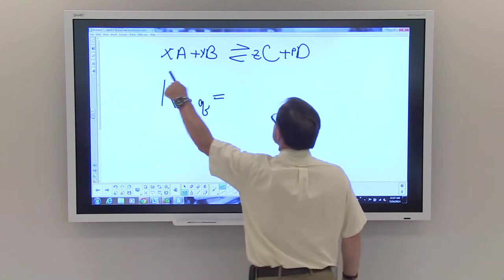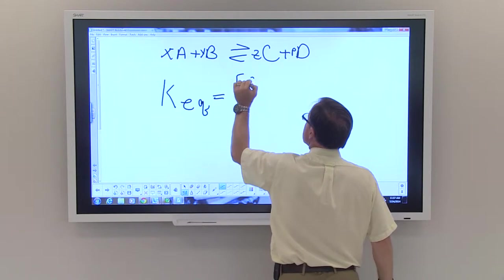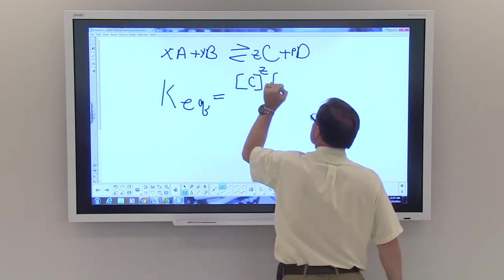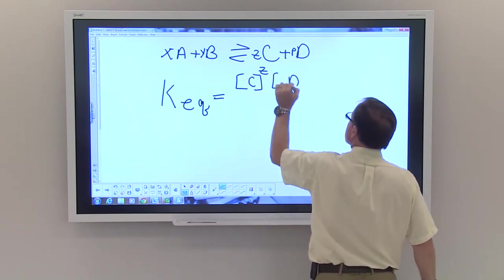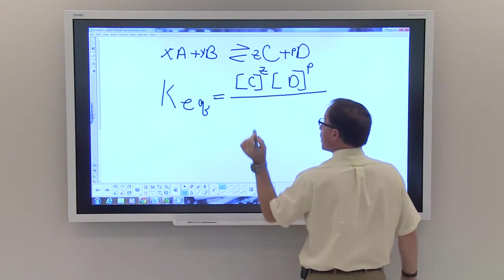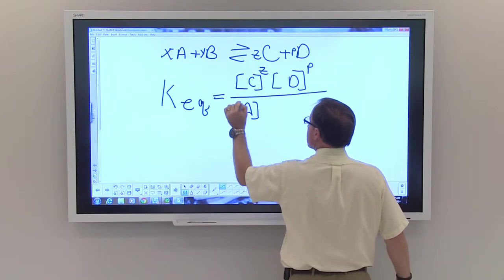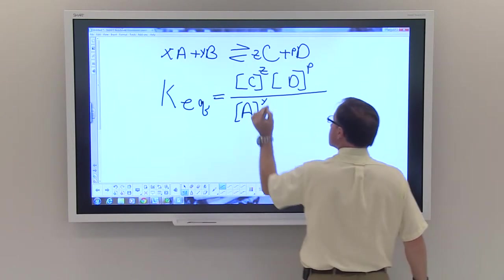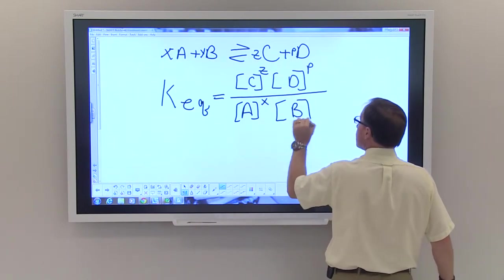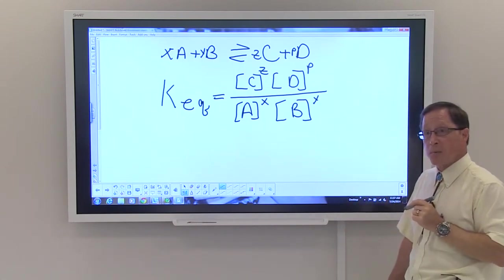For instance, in this case, we would say that KEQ would be C raised to the Z power times D raised to the P power divided by A raised to the X power times B raised to the Y power. This would be your equilibrium expression.